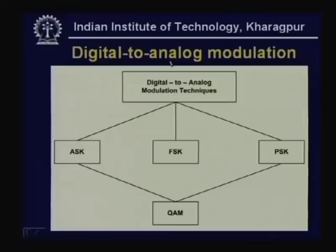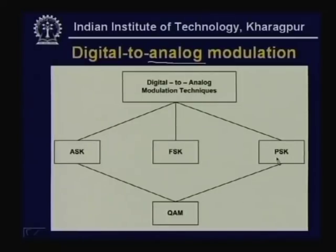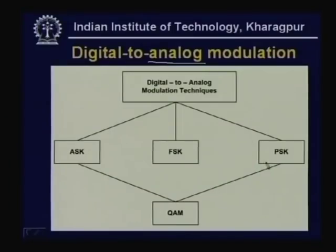For digital-to-analog modulation, where the data is digital and the signal is analog, we have three techniques: Amplitude Shift Keying (ASK), Frequency Shift Keying (FSK), and Phase Shift Keying (PSK). These can also be combined to form Quadrature Amplitude Modulation (QAM). QAM and PSK are widely used in many applications; ASK is used in transmission of signal through optical fiber. We shall consider all these modulation techniques in detail.